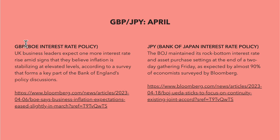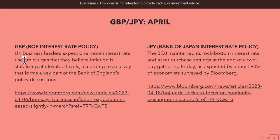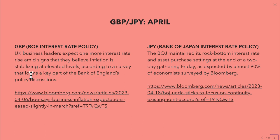Looking at the pound: according to a Bloomberg article, UK business leaders expected one more interest rate hike amid signs that inflation was stabilizing at elevated levels, according to a survey forming part of the Bank of England's policy discussion. On the other hand, the Bank of Japan maintained its rock-bottom interest rates and asset purchase settings at the end of a two-day gathering, as expected by almost 90% of economists surveyed by Bloomberg.